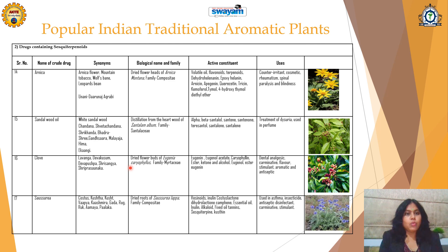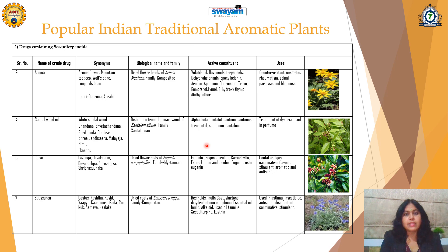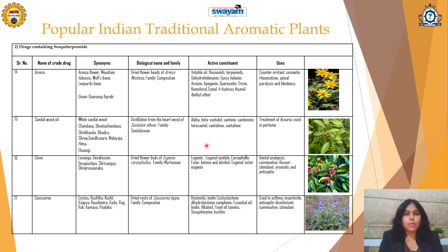Next is Sandalwood oil, which is called as White Sandalwood or Chandan or Shweta Chandan, obtained from Santalum album, Family Santalaceae. It contains santalol, santhene, santanone, and santanol. It is useful in treatment of dysuria and in perfumes. After mint, sandalwood oil is the most preferred oil for the perfume industry — it is among the topmost preferred oils for perfumes.